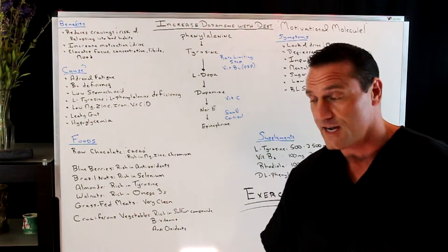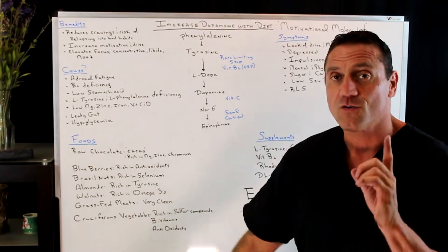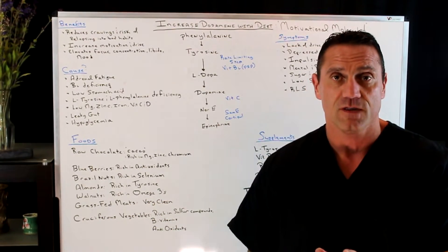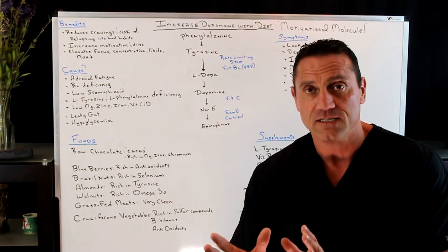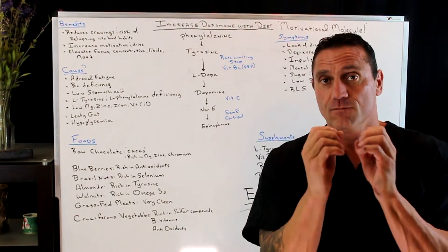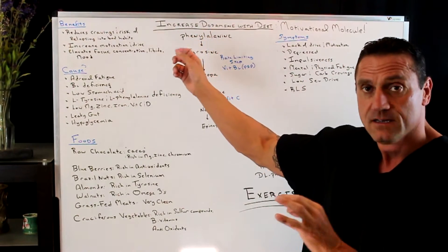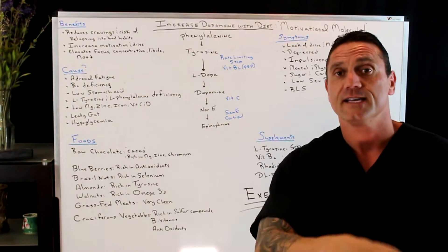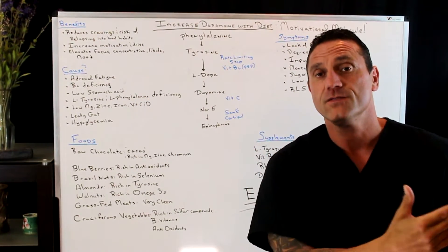Almonds, rich in L-tyrosine. Walnuts, rich in omega-3s. Grass-fed meats, whether it be fish, chicken, steak, grass-fed. Broken down to the basic form, amino acids. L-phenylalanine, L-tyrosine gets converted to L-DOPA, dopamine from the food.